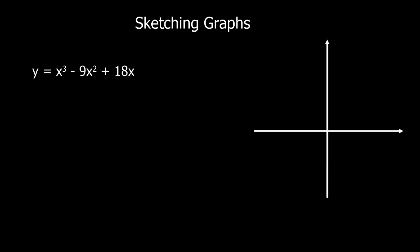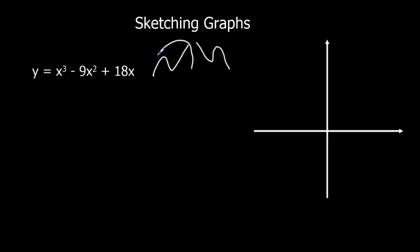Okay, so here's another question — maybe pause the video and give this one a go. So we've got another cubic function. It's a positive cubic, so it's going to make this shape again, starting at the bottom and going up. If it were negative, it would start at the top and go down — but that's not what we've got here. We've got a positive cubic.